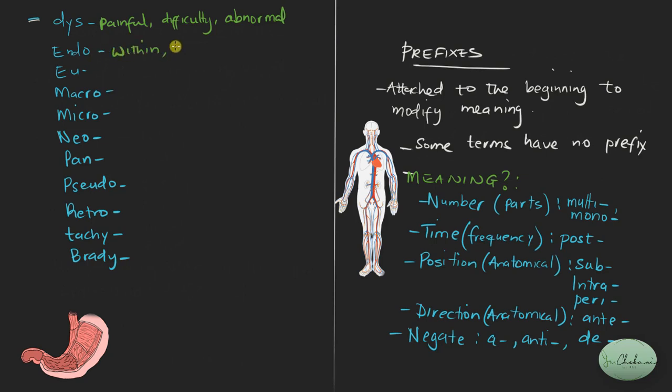So endo means within or inner, like endometrium meaning the inner lining of the uterus. Endocardium, meaning the inner lining of the heart. And then the next one is eu. Eu means normal or good or within range, like when you say someone is euthyroid, it means that their thyroid function is normal. Macro means large.